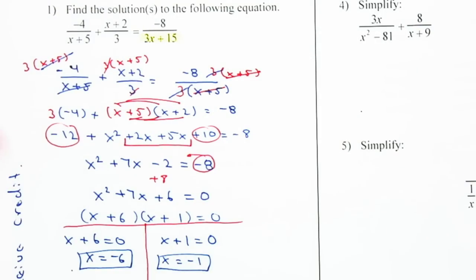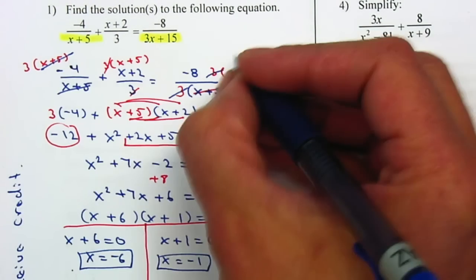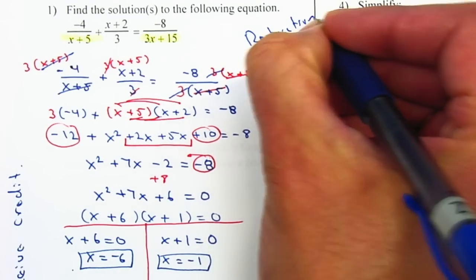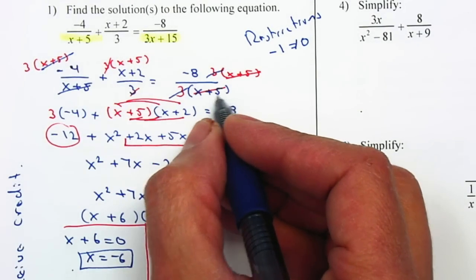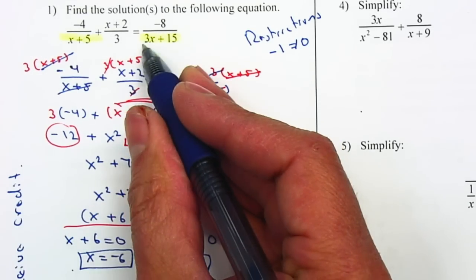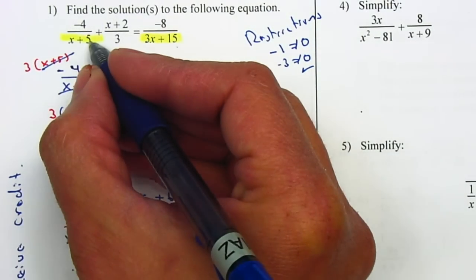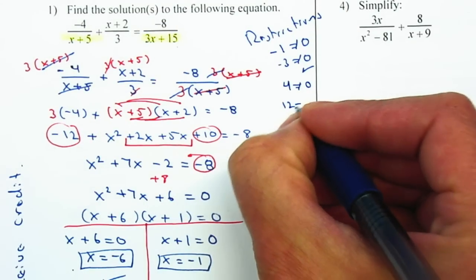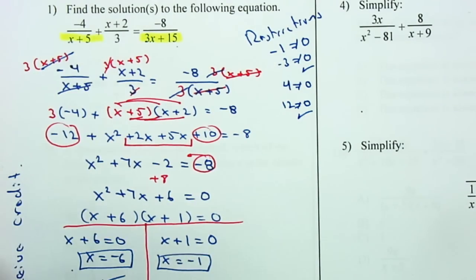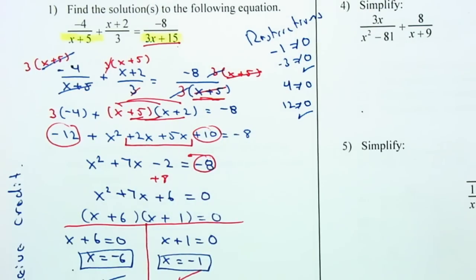If I plug in x = -6: (-6) + 5 = -1, which is not 0, so that's fine. Checking the factored form: -18 + 5 = -13, not 0. For x = -1: (-1) + 5 = 4, not 0, and -3 + 15 = 12, not 0. Remember you didn't actually need to plug into the factored denominator since it's just (x + 5). Both answers are valid: x = -6 and x = -1.